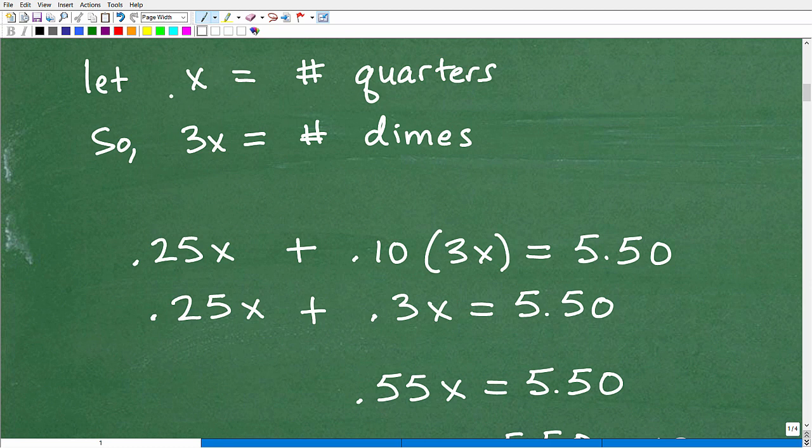Without further ado, what we're going to do is let X equal the number of quarters. We're going to only use one variable because we have three times the number of dimes than quarters. If we have X quarters, then we have 3X dimes. If I have whatever amount of quarters, because I have three times the number of dimes than quarters, I'm going to have 3X amount of dimes. This is the number of quarters and dimes that we have based upon the given information.